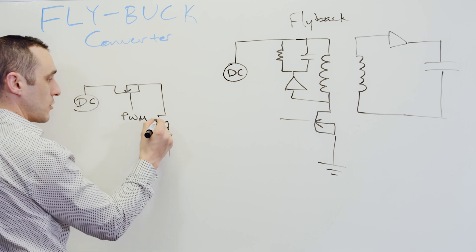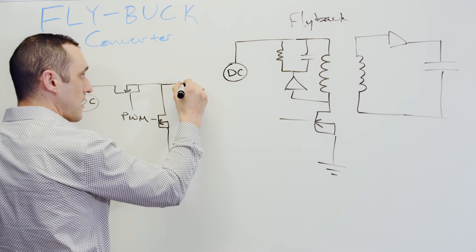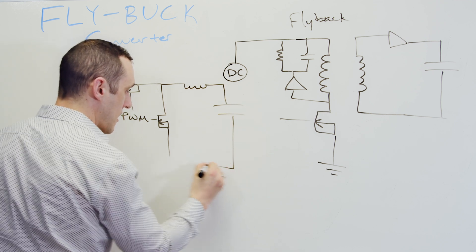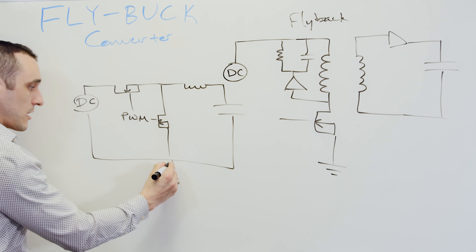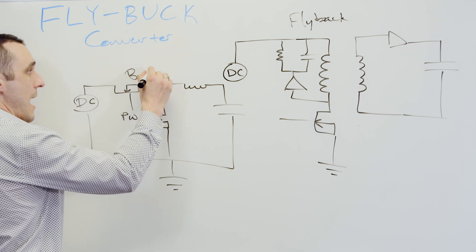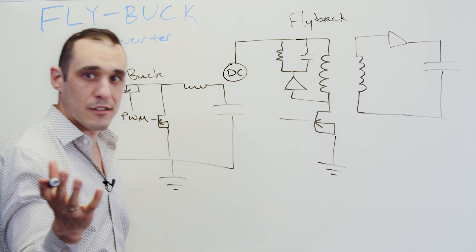And then we have the PWM signal also going here. And then this comes over to our inductor, and then a capacitor. And then of course this wraps back around and all of this goes to ground. So this is our buck converter, and this is our flyback converter.